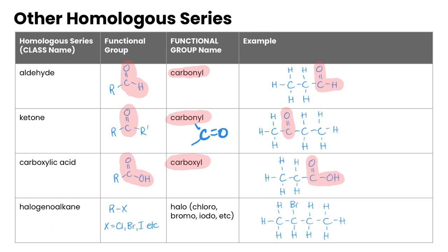Next up, haloalkanes — pretty much any kind of carbon-containing chain that has a halogen attached to it somewhere. The more likely ones are chlorine, bromine, and iodine, though you could have fluorine as well. Here is an example of a haloalkane.